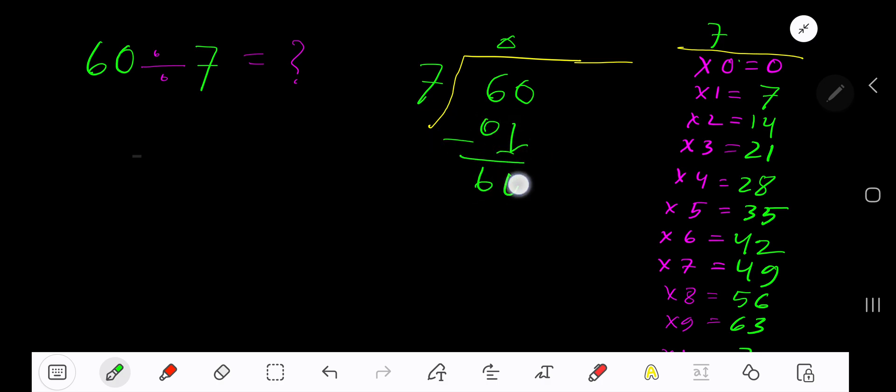7 goes into 60 how many times? 9 times would be 63, which is too much, so 8 times. 8 times 7 is 56. Subtract to get 4. So our answer is 8 with remainder 4.